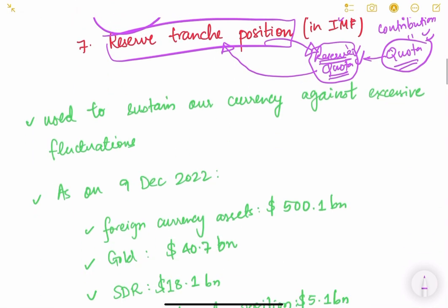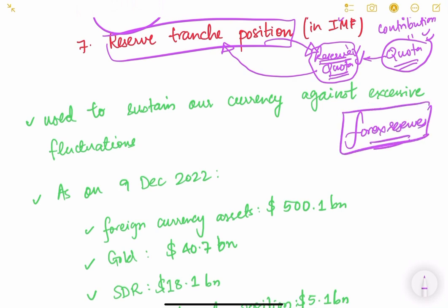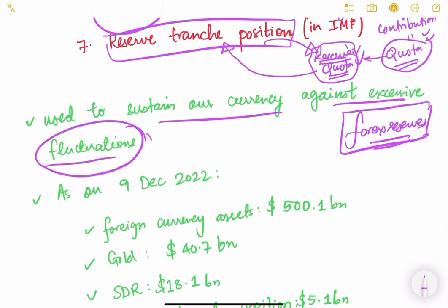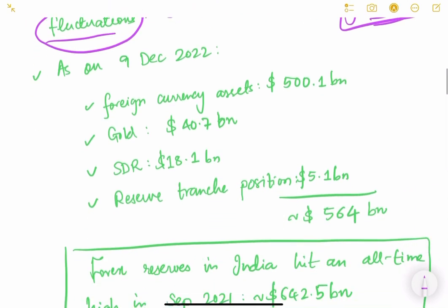Forex reserves are used in times of crisis, especially during a balance of payments crisis, to support and sustain the currency against excessive fluctuations. That is the primary use of forex reserves.